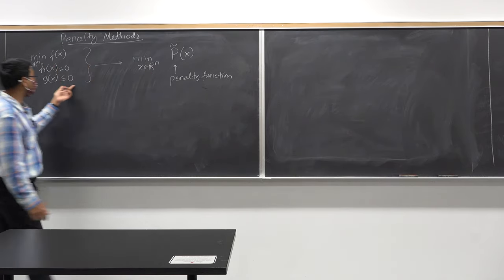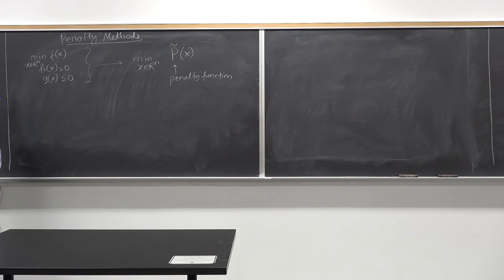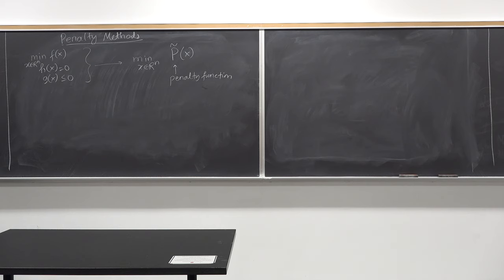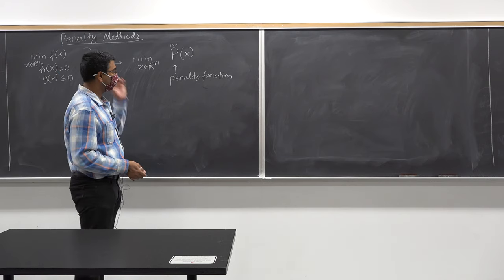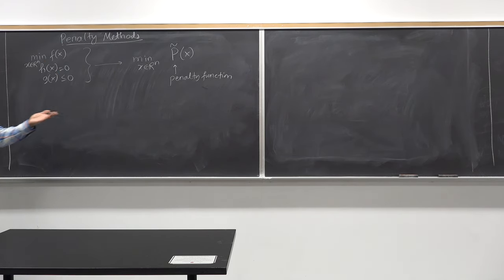So that if I compute a stationary point, it should correspond to the minimum of this particular optimization problem. That's our goal. Now let's try to come up with a very stupid penalty function and argue why it seems stupid. Then we'll come up with a more intelligent penalty function and study the properties of optimizing it, which would lead to a class of algorithms known as sequential quadratic programming.